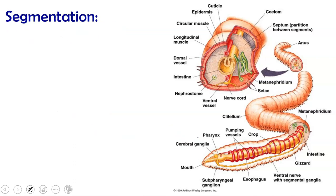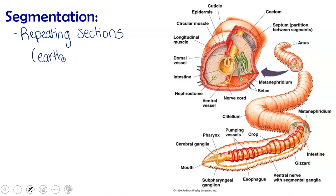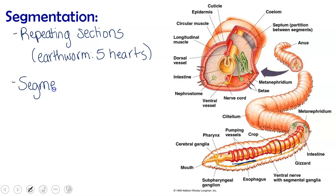Segmentation: these annelids are segmented and have repeating sections. For example, an earthworm actually has five hearts. They are those larger vessels that do the majority of the pumping of blood throughout the body, whereas the other vessels are more just carrying it between the two main vessels. The segments in an annelid are divided by something called septa, which are kind of like a thick membrane.